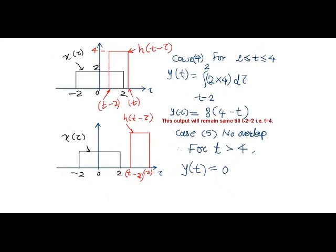Substituting the amplitude levels and the limits of integration, output is 8 times 4 minus t. This situation of overlap will continue and hence output will remain same till this h of t minus 2 reach up to 2, that is in terms of interval of t that goes up to t equals to 4.